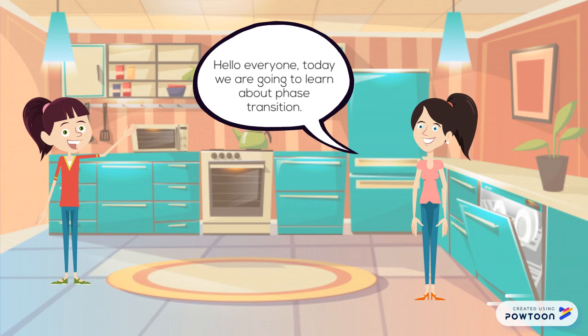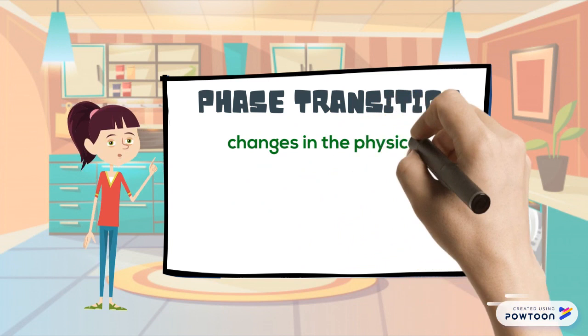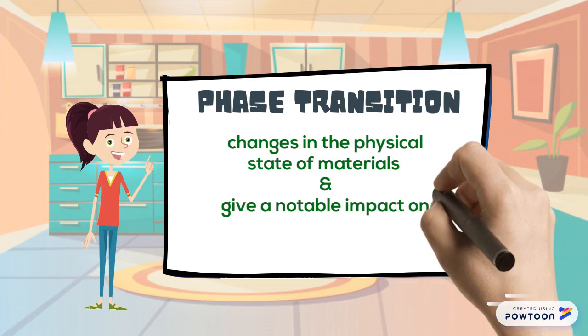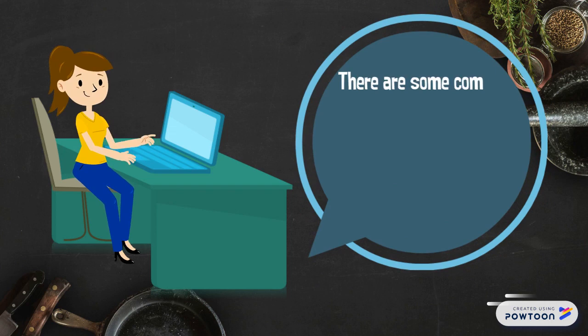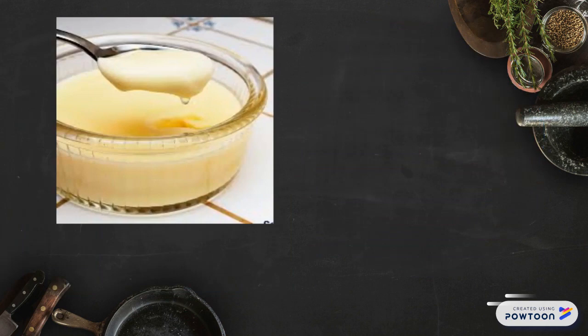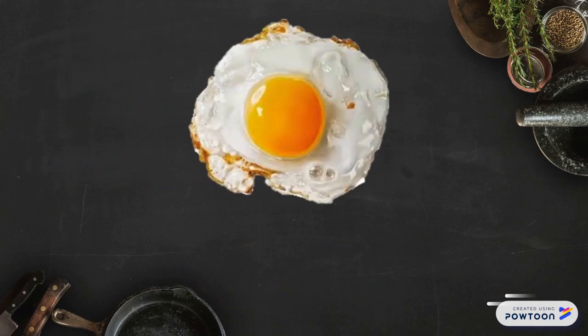Hello everyone. Today we are going to learn about phase transition. Phase transition is defined as the changes in the physical state of materials, including food components, which will give a notable impact on physical properties. There are some common phase transition phenomena that happen all the time in our daily lives, which include starch gelatinization and retrogradation, melting and crystallization, and protein denaturation.